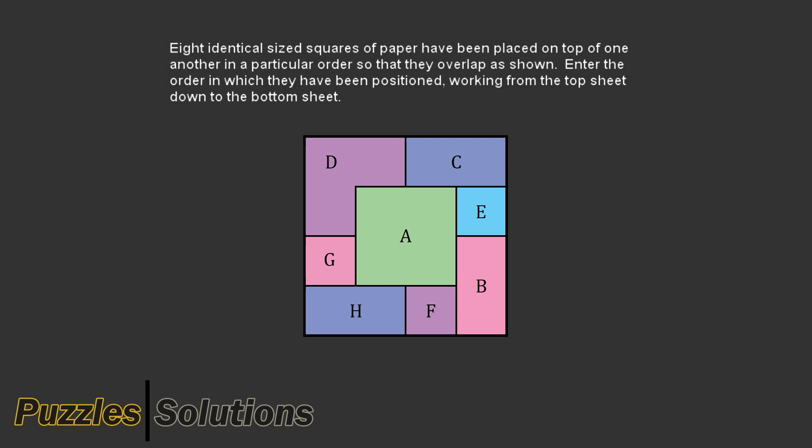Now imagine in your head that we remove A. What piece of paper could be fully visible from removing A? No paper besides D could be fully visible.